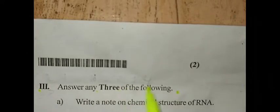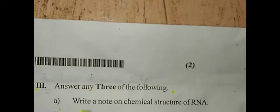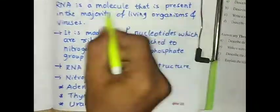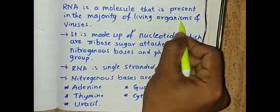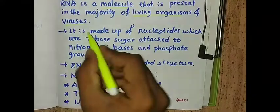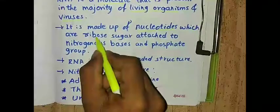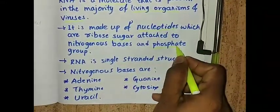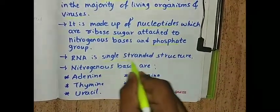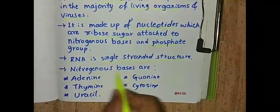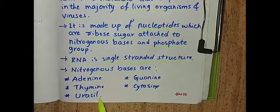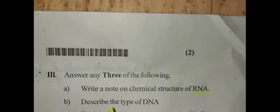The next main is answer any three of the following. The first question is write a note on chemical structure of RNA. RNA is a molecule that is present in the majority of living organisms and viruses. It is made up of nucleotides which are ribose sugar attached to nitrogenous bases and a phosphate group. RNA is a single standard structure. The nitrogenous bases are adenine, guanine, thymine, cytosine, and uracil.